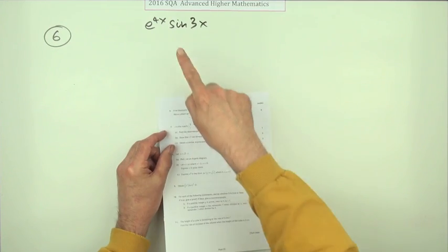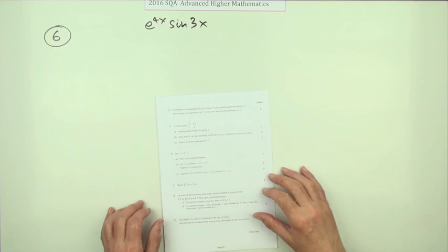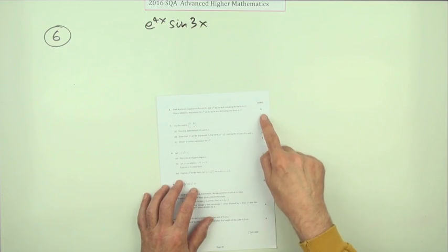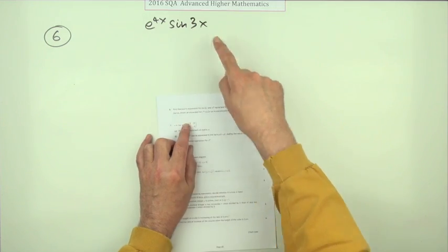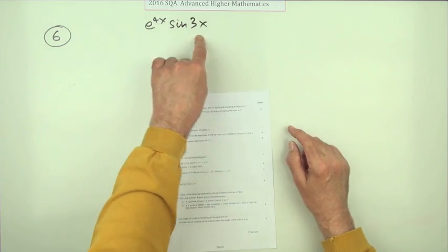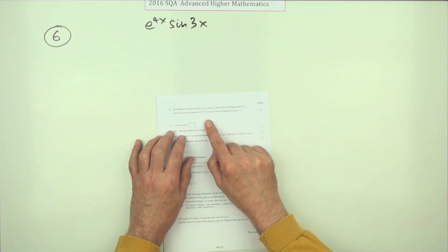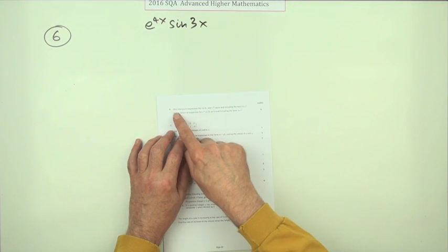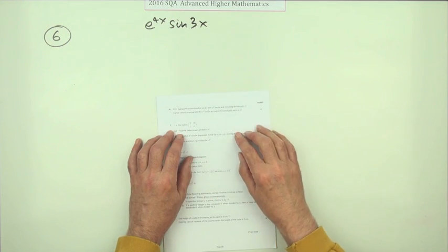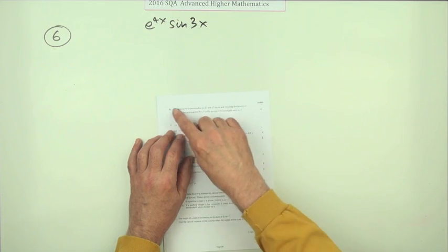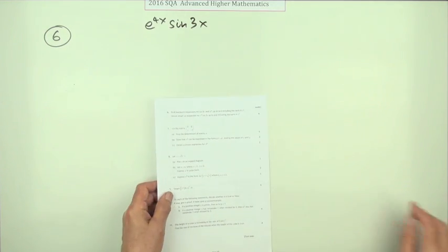Question 6 from the 2016 Advanced Higher Maths - Maclaurin expansions, 6 marks. You have to ultimately obtain an expression by first finding expressions for the two parts. It says find Maclaurin expansions. I couldn't state them straight off, but I'm assuming you're allowed to use the known expansions because they're so common.